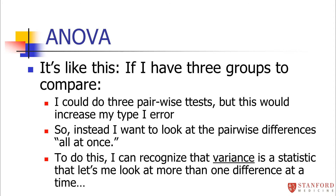Here's the general idea of an ANOVA — I won't walk through exact calculations, but I want you to understand the concept. If I have three groups and want to compare means, I could do three pairwise t-tests, but that would increase my type one error. What I want to do is look at the difference in means of all three groups at once. The variance is a statistic that lets me look at more than one difference at a time. The ANOVA is called analysis of variance because it involves calculating variances.